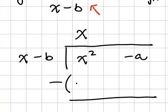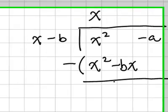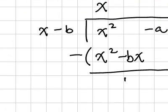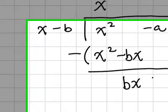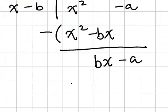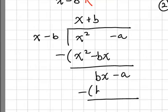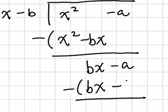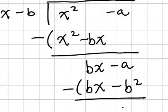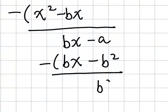x times x gives you x squared; x times minus B gives you negative Bx. So you minus off the first column. The second column you will have Bx. Bring down the minus A. Then you continue — B times x gives you Bx, and B times minus B gives you minus B squared. So the remainder is actually B squared minus A.